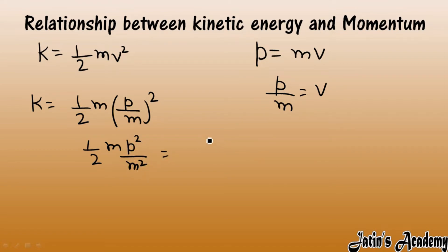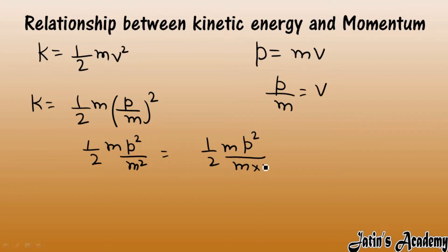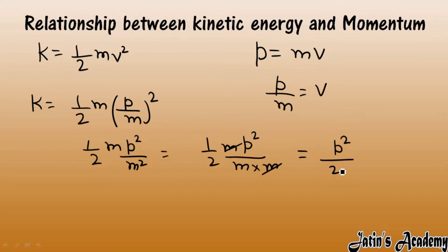So, 1 by 2 m, P squared is as it is. Write m squared as m into m, then cancel m from numerator and denominator both. So here we got P squared by 2m.